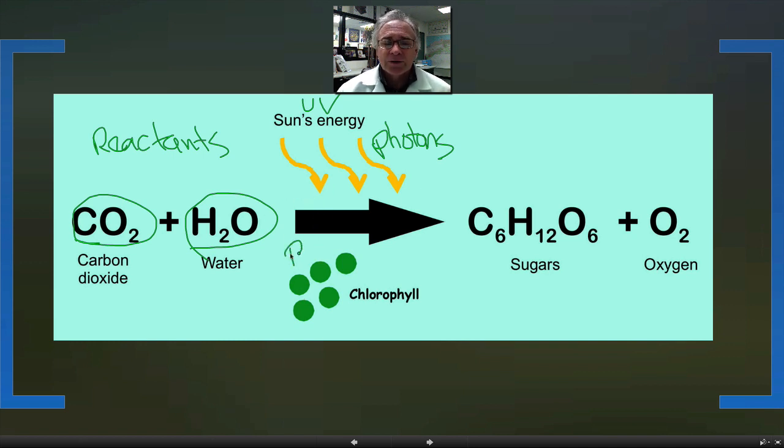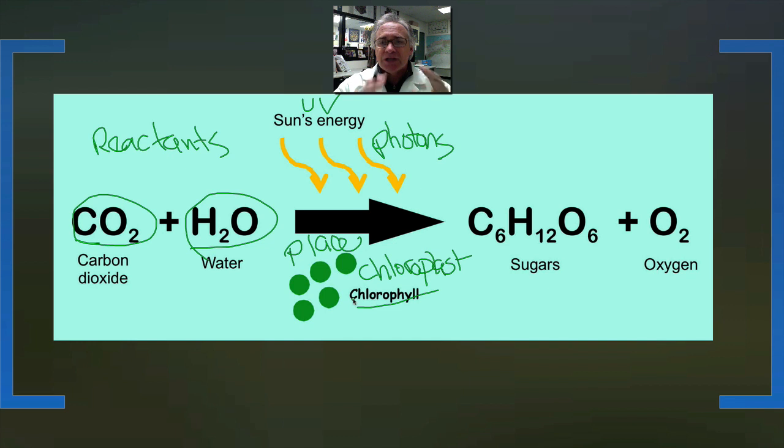In addition to the energy source to run this reaction, we also need a place for it. That place is chloroplasts. In chloroplasts are chlorophyll. Inside the chloroplasts is chlorophyll, a pigment that has components where when the photons hit it, it excites those electrons to actually do some work.